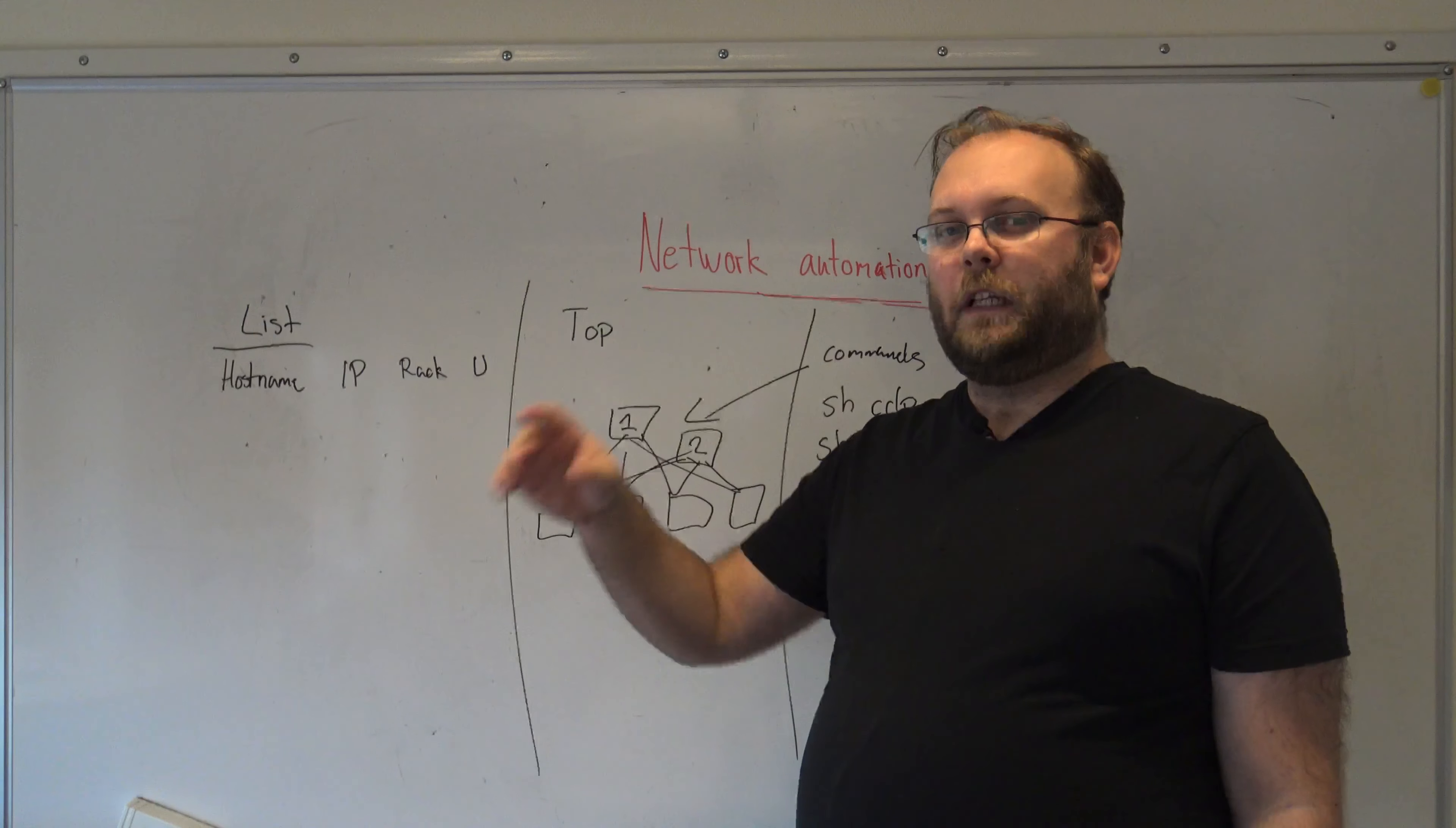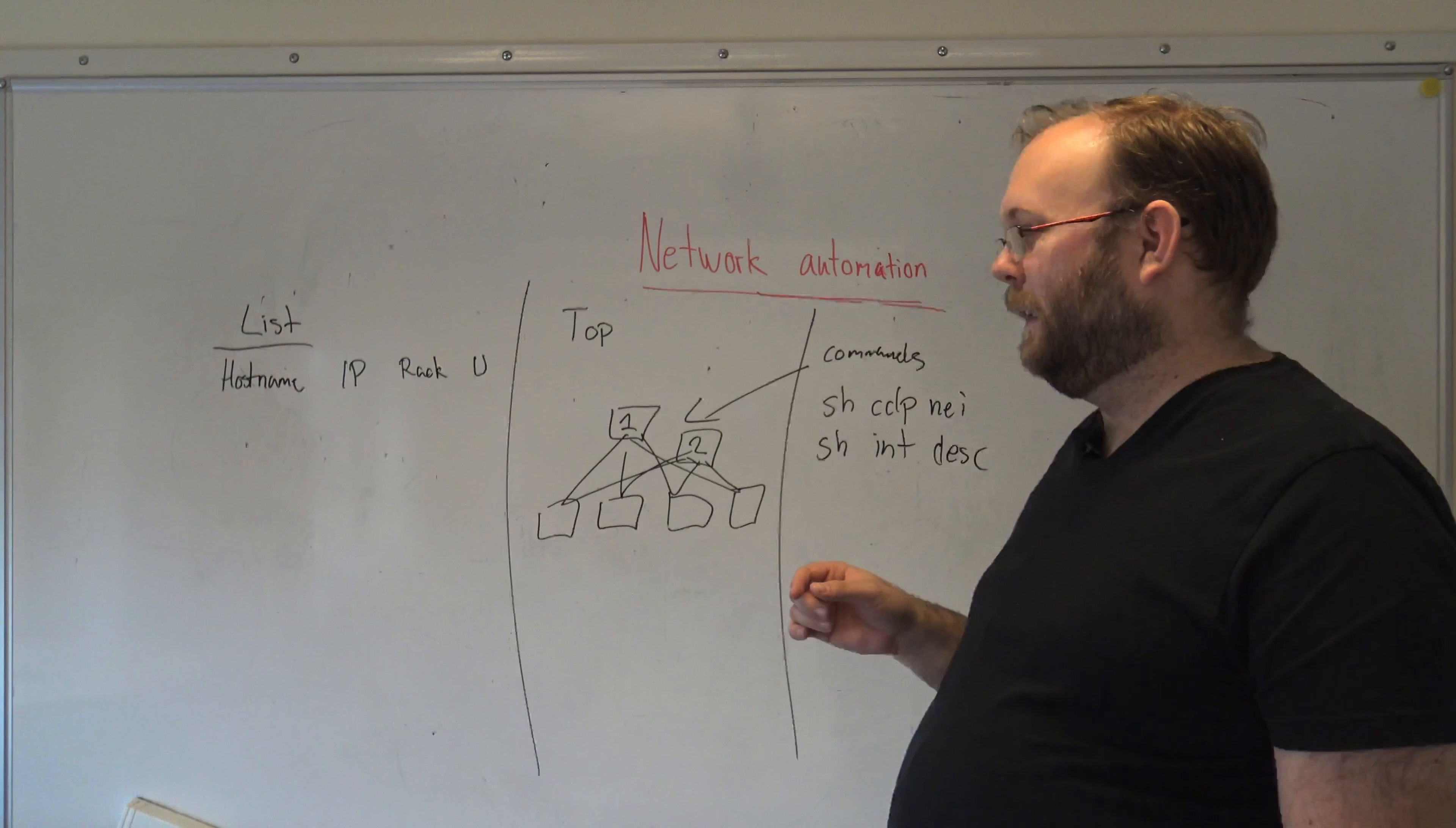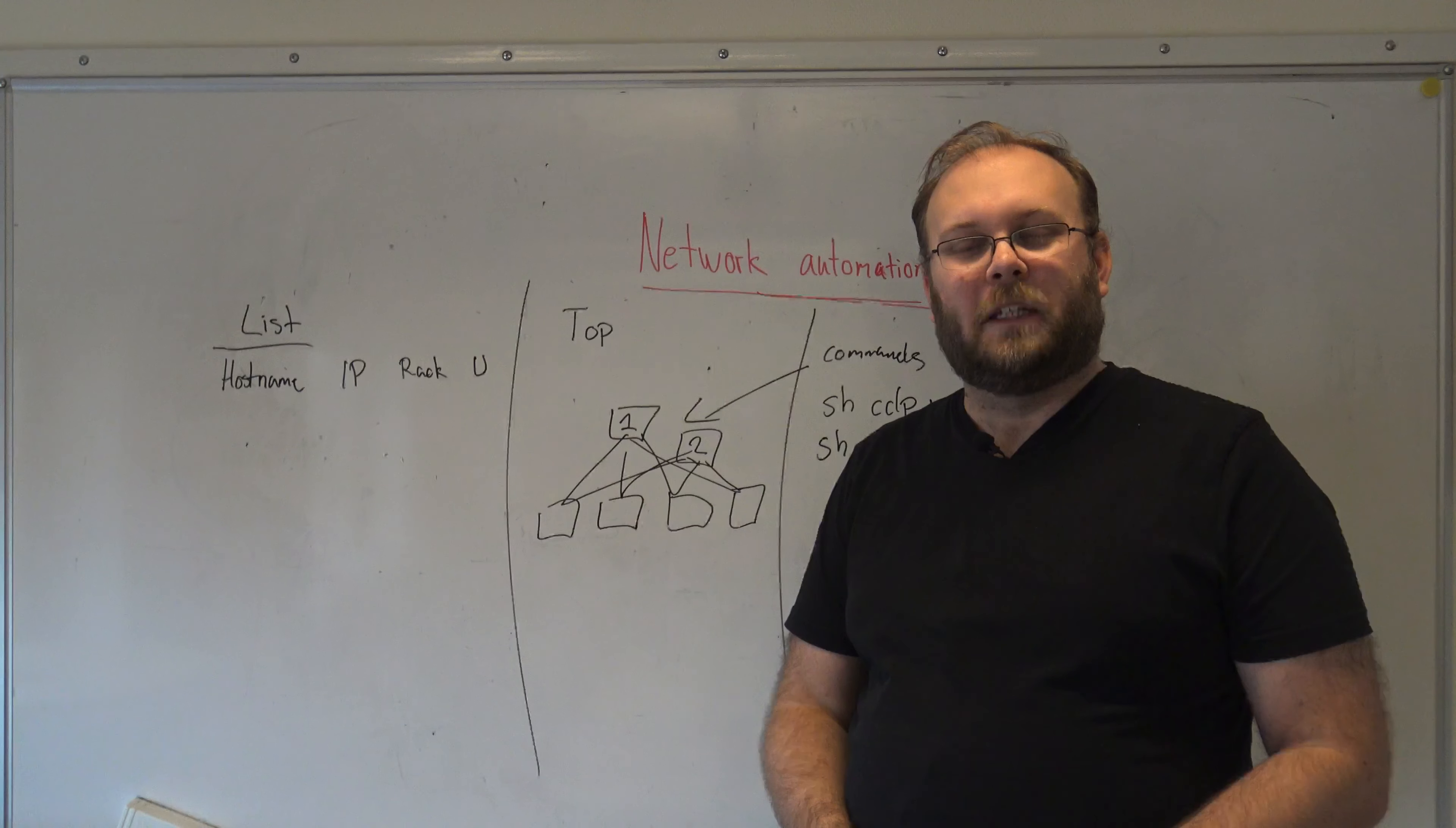Hopefully this system then has an API and the API you can do optimization from. So if you do deployment and reading from the system with an API then you get correct information to your deployment. But the issue I see is that there are changes made and people forget or don't add them in the documentation system.